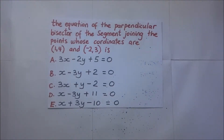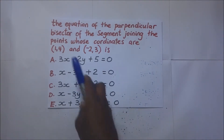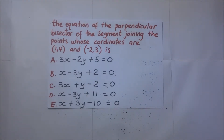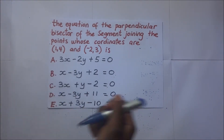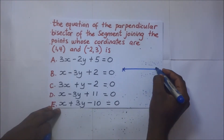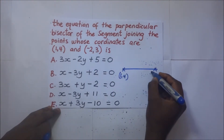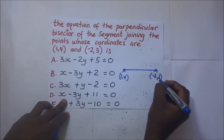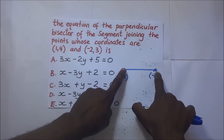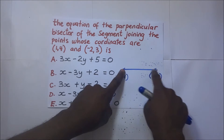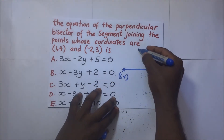Next, they are asking for the equation of the perpendicular bisector of the segment joining points (1, 4) and (-2, 3). The interpretation is that we have a line joining these two points, and this line has a perpendicular bisector.